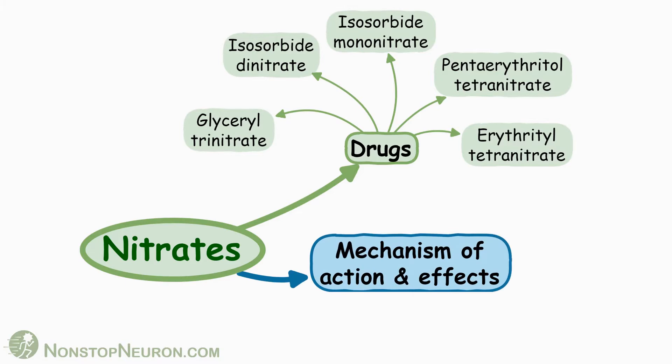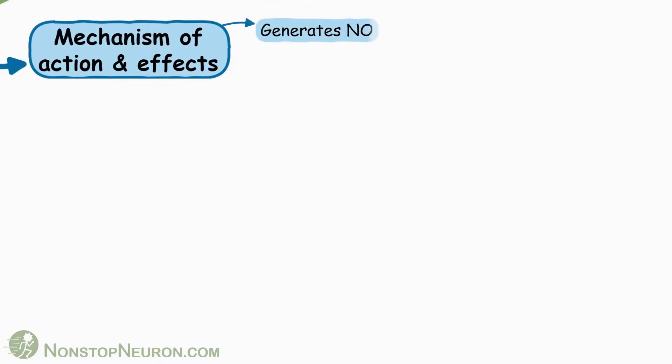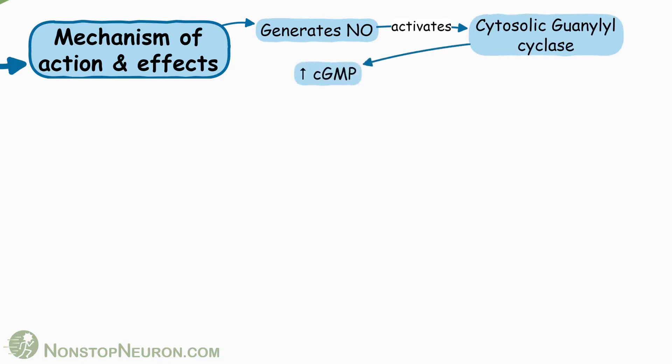Let's see the mechanism of action and effects of these drugs. They generate nitric oxide in the body. Nitric oxide activates cytosolic guanylyl cyclase, which increases cGMP level. This causes smooth muscle relaxation at multiple sites in the body.